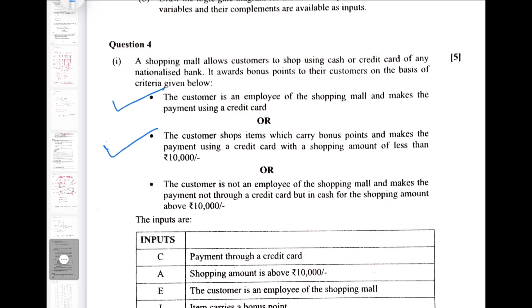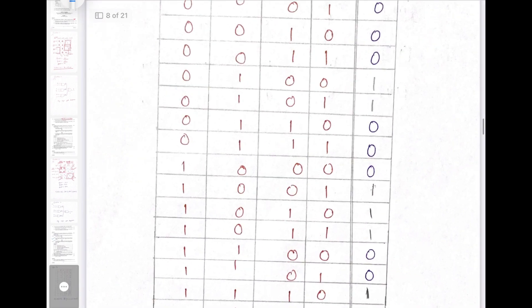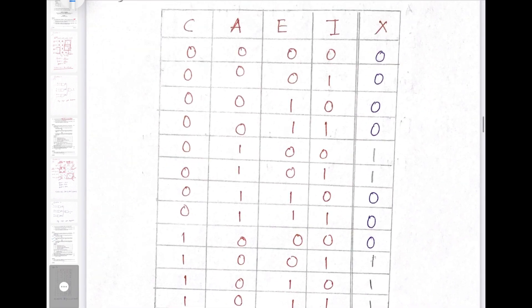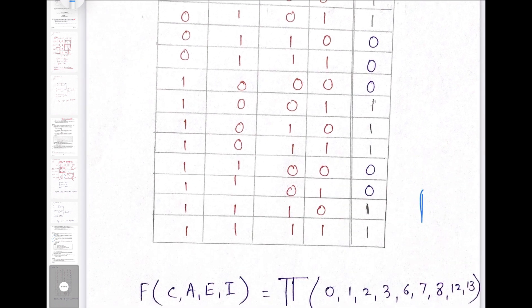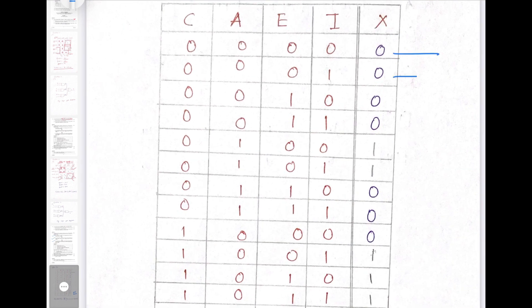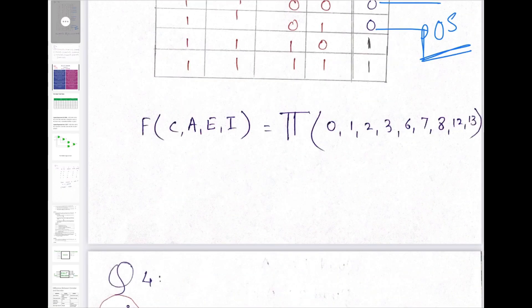Next is question number 4. Based on three conditions given, when we draw the truth table it will look like this. Since we are expected to make POS, that means from the truth table we have to consider the entries which are 0. The entries which are 0 will give us: π(0, 1, 2, 3, 4, 5, 6, 7, 8, 12, 13). This is written as M0 · M1 · M2 and so on.